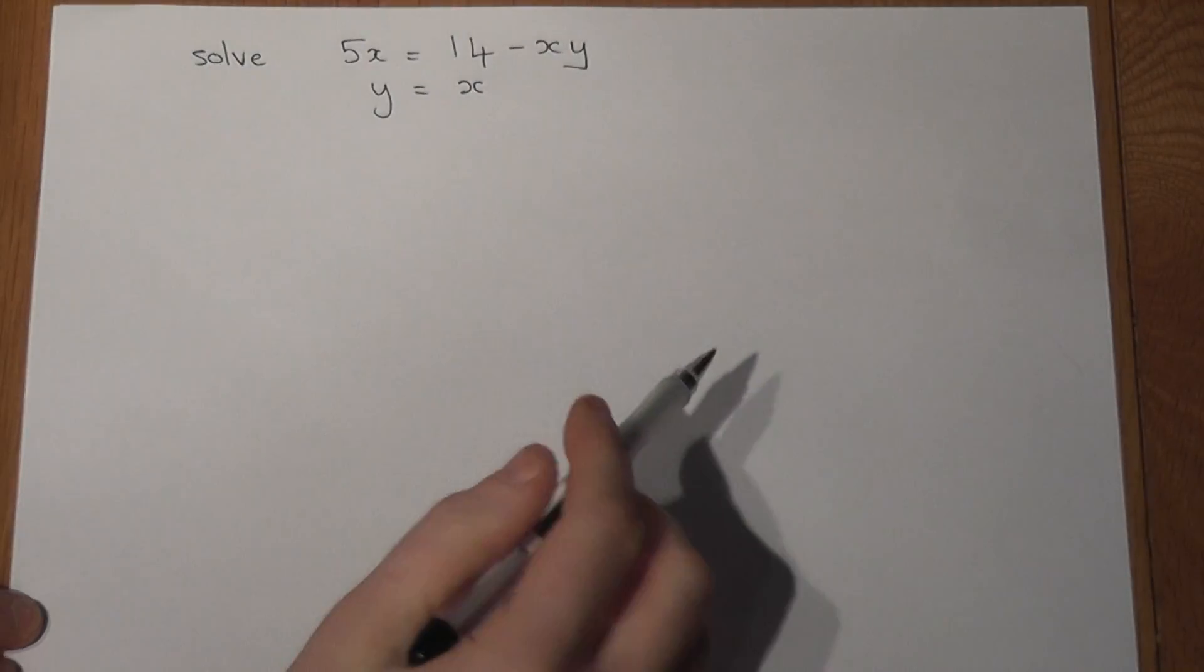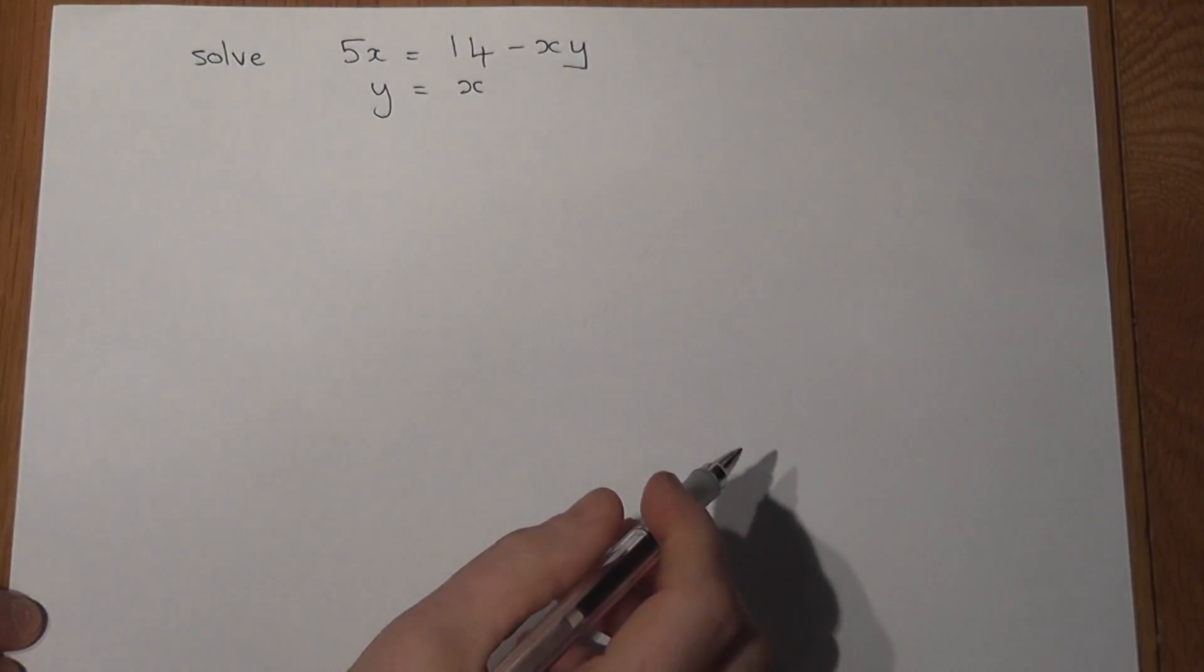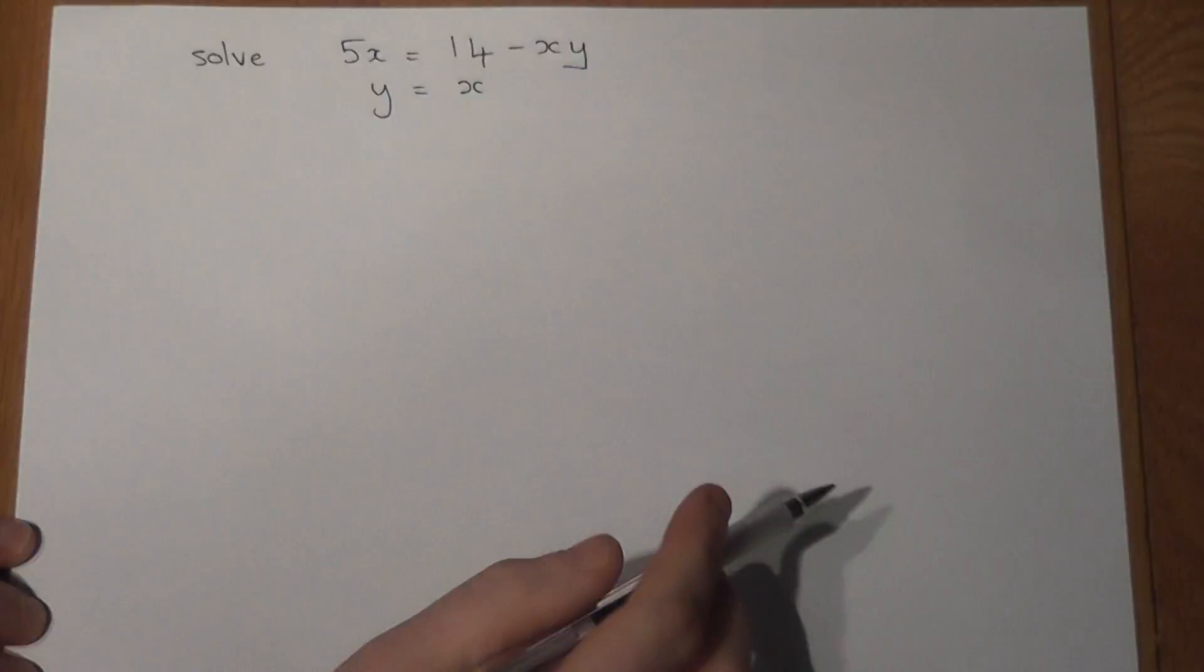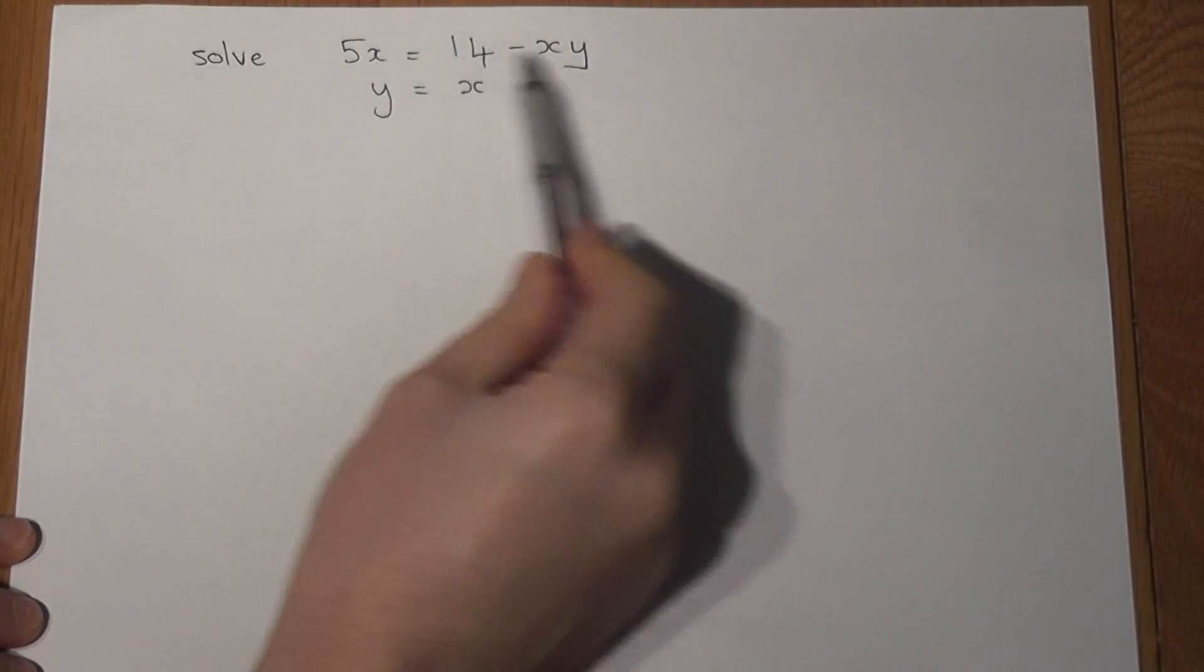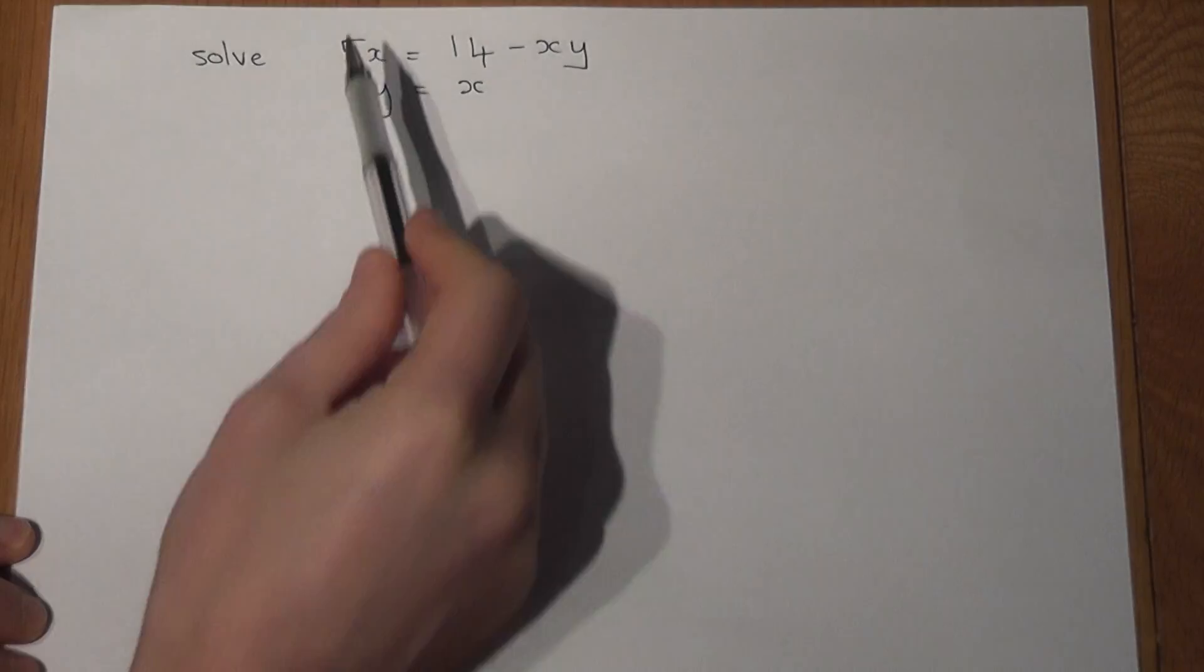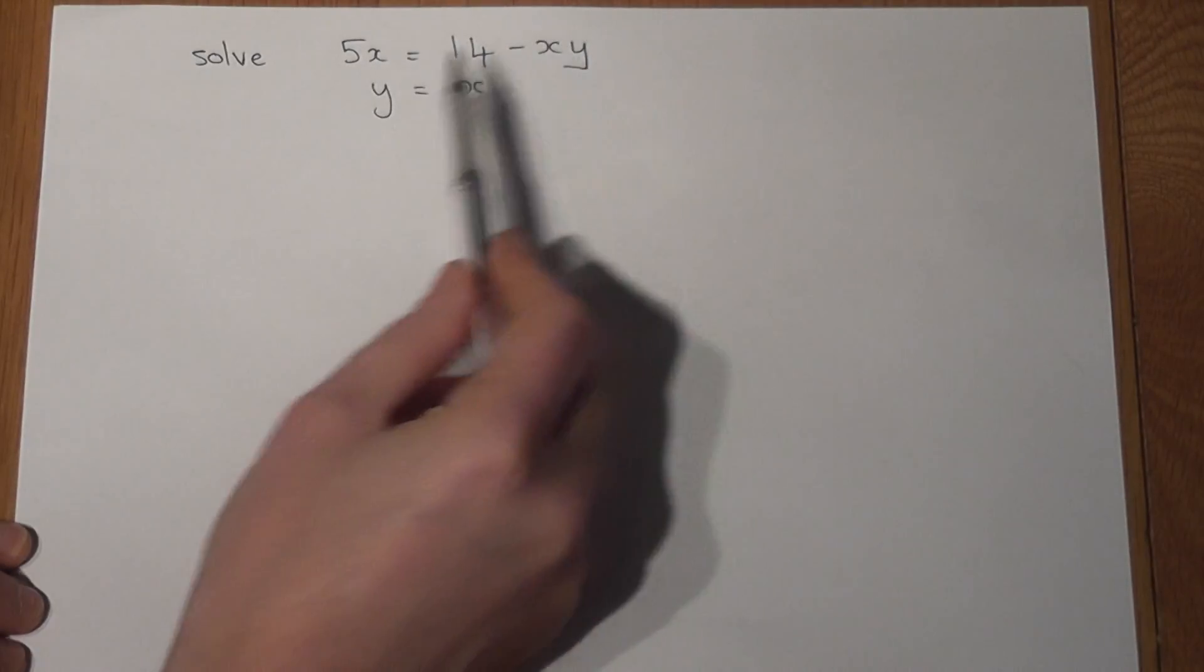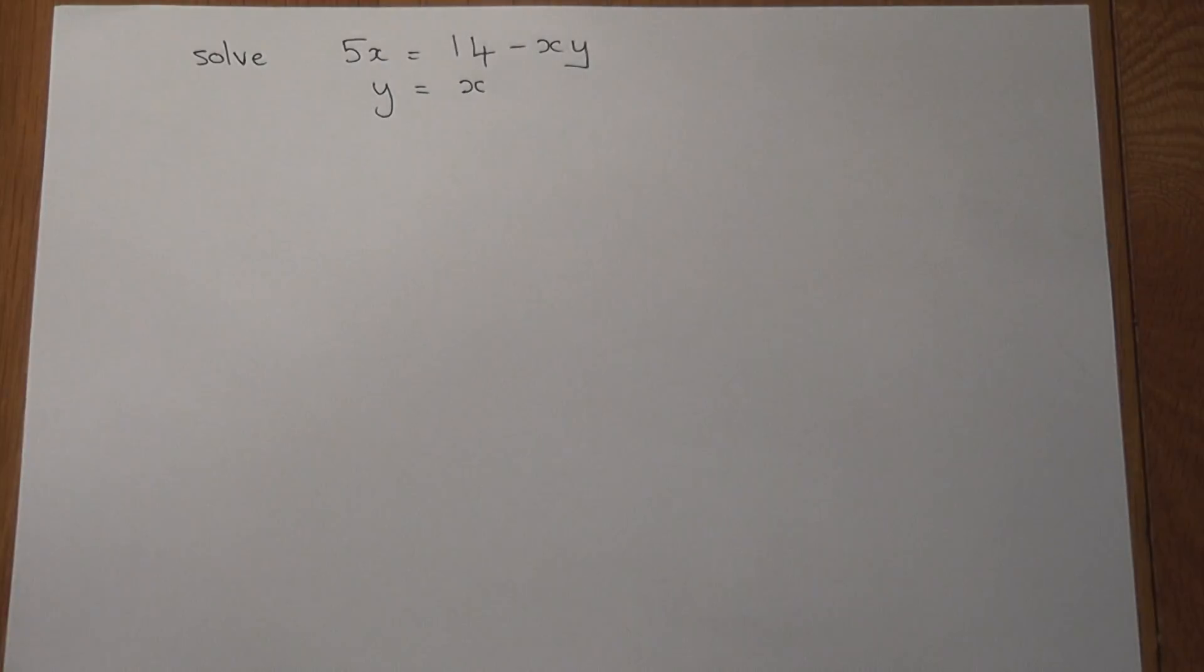This video revises a style of simultaneous equations in which we've got two equations: 5x equals 14 minus xy and y is equal to x.